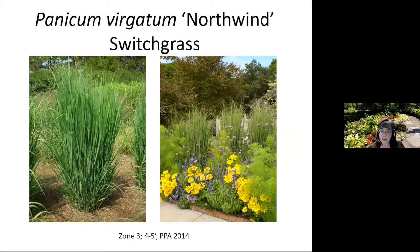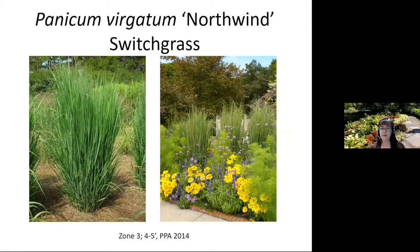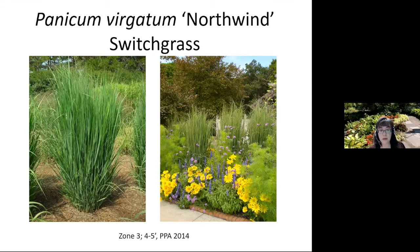Northwind switchgrass also did very well in our studies — a zone three plant standing four to five feet tall. The seed heads aren't as attractive as some other grasses, but it stands straight up and down like an exclamation point with a nice columnar form. You can use it as a living fence or a backdrop. It's surprising how versatile switchgrass is — it works in rain garden settings and in xeric or drought settings.